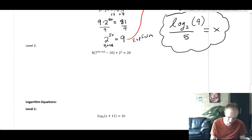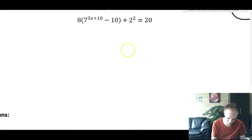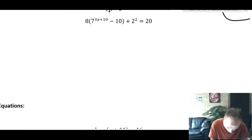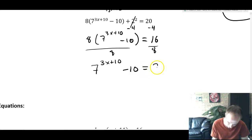For the next problem, it's going to be very similar. We've just kind of wrapped it up a little bit more intensely. So first thing, 2^2 is 4. Let's just subtract 4 from both sides and see what happens. So we'll get 8 times 7^(3x+10) - 10 = 16. I like this. I see an 8 and a 16 here. So let's divide by 8 and we'll get 7^(3x+10) - 10 = 2.